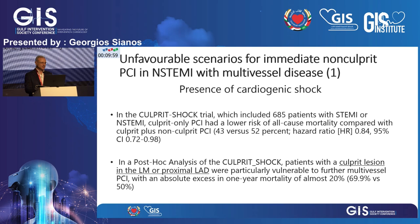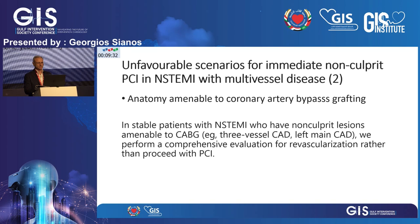One scenario that should be excluded, in my opinion, is cardiogenic shock. We know this applies to STEMI and it should be considered in NSTEMI as well, since multivessel PCI in these patients leads to worse outcomes. In cardiogenic shock, I prefer to focus on the culprit lesion only — though cardiogenic shock is less frequent in NSTEMI compared to STEMI patients.